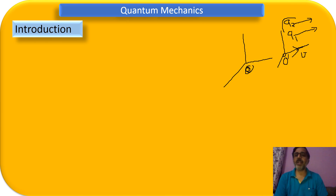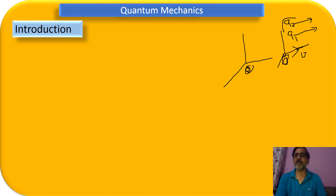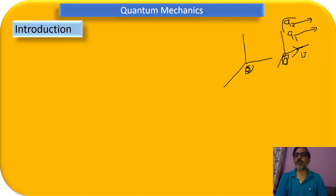Now let us see what the two observers are going to observe. Observer O dash finds the two charges are at rest, because both the observer and the charges are moving with velocity V together. So a repulsive force is acting between the two charges — they are repelling each other.